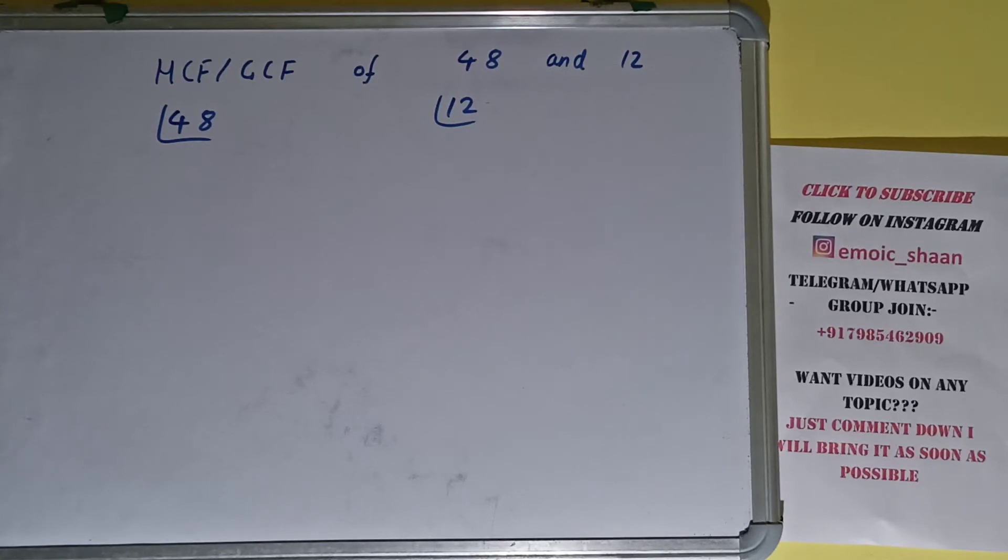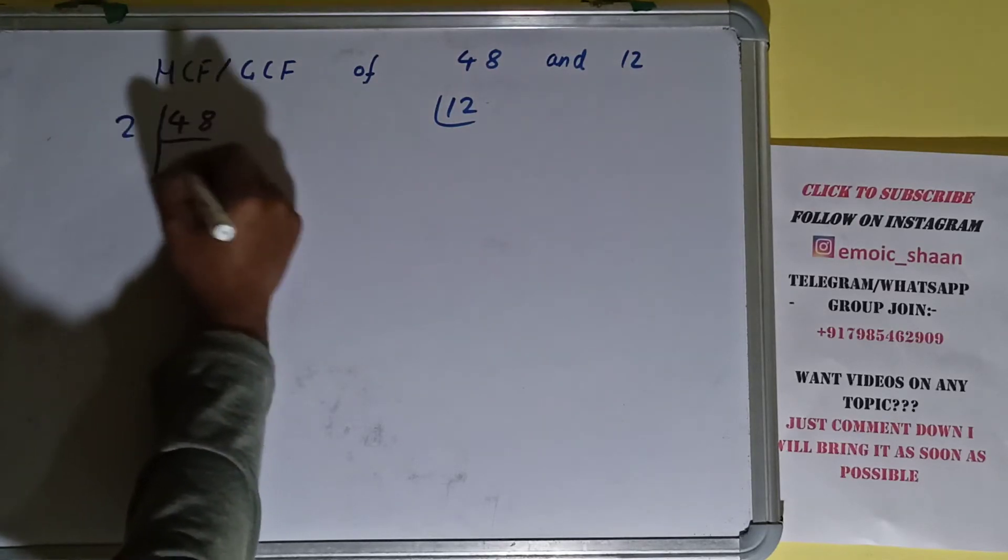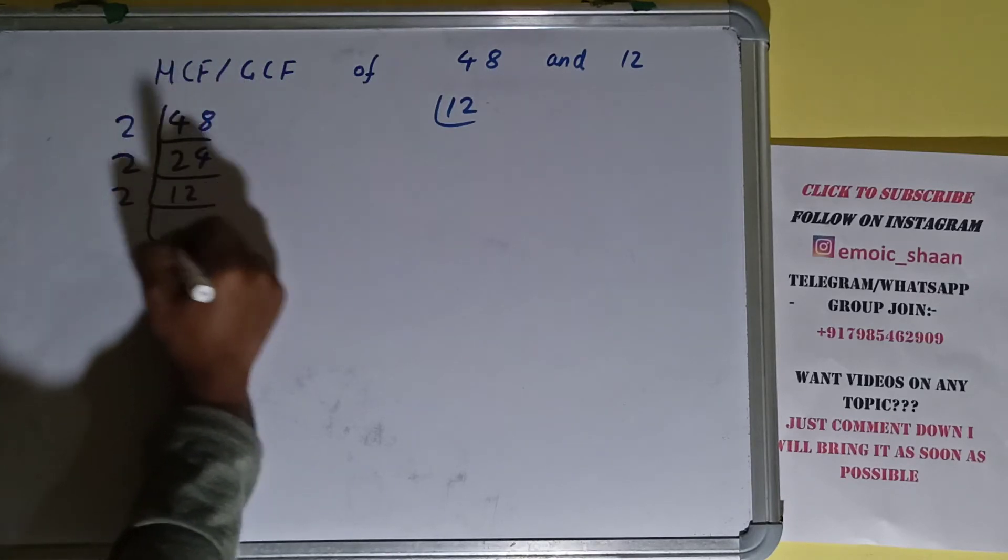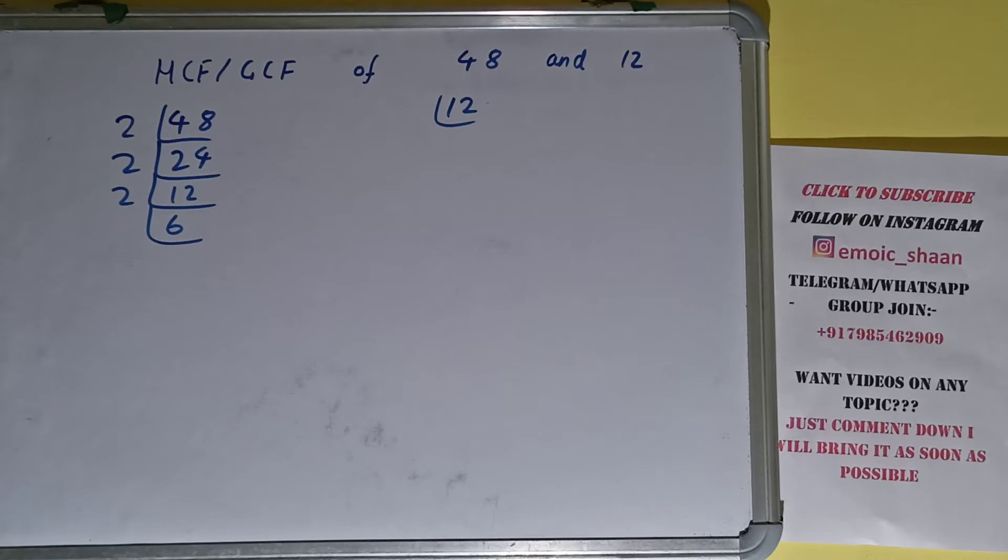24 is again divisible by 2, we'll have 12. 12 is again divisible by 2, we'll have 6. 6 is again divisible by 2, we'll have 3.